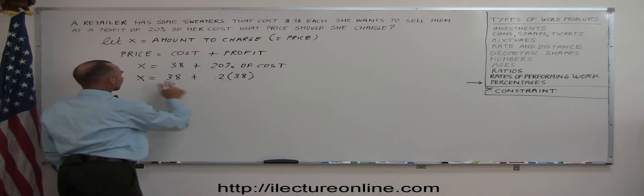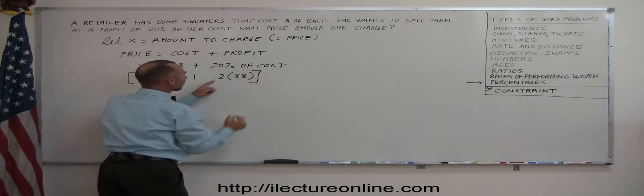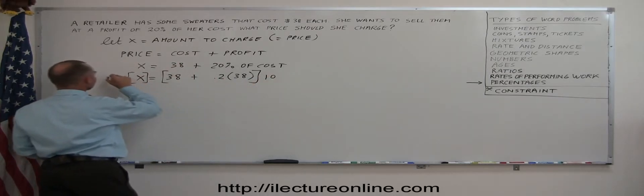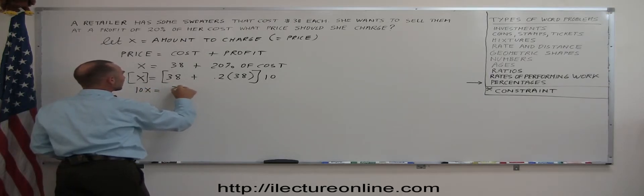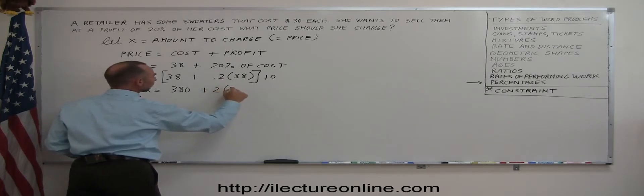Since we have a decimal place here, we want to multiply both sides by the appropriate amount to get rid of the 0.2. Since there's only one decimal place, we multiply both sides by 10. So we get 10X equals 10 times 38 is 380. 10 times 0.2 is 2 times 38.